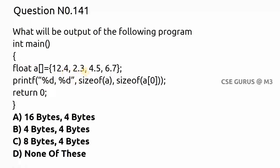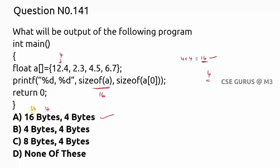Four values are taken, and since each is a float, each takes 4 bytes. So 4 into 4 equals 16 bytes total for the array — sizeof(a) is 16. And sizeof(a[0]) means only the first element, which takes only 4 bytes. So the answer is 16 and 4, meaning option A is correct.